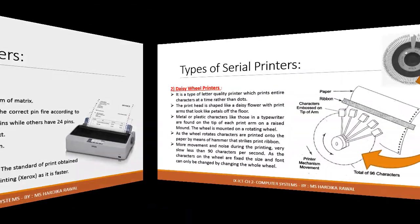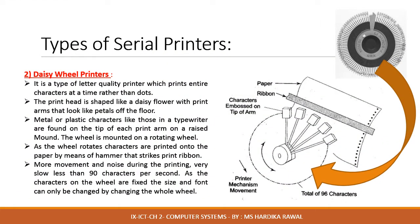The daisy wheel printer is a type of letter quality printer. These printers print an entire character at a time rather than dots. The print head is shaped like a daisy flower with print arms that look like petals. Metal or plastic characters like those in a typewriter are found on the tip of each print arm on a raised mount. This wheel is mounted on a rotating wheel; as the wheel rotates, the characters are printed on the paper by a hammer that strikes the print ribbon. This results in a great deal of movement and noise during printing, making it very slow — less than 90 characters per second.